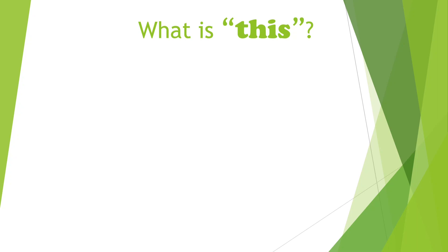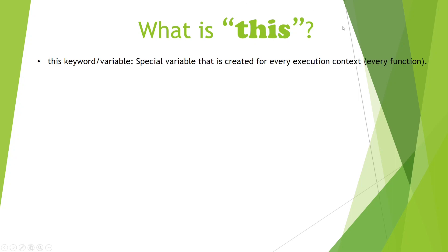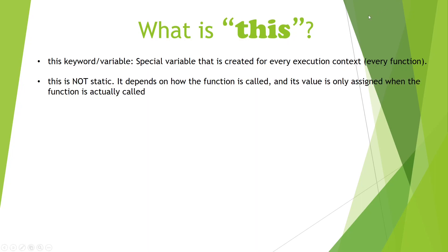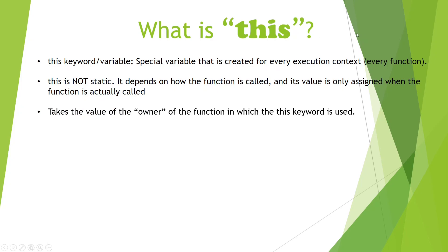So what is 'this'? This is a very special variable in JavaScript — you can also call it a keyword or a variable — but this variable is always created for every execution context. That means it's not static; it depends on how the function is called. By function I mean the function inside which we are using the 'this' keyword. The value of the 'this' keyword will be assigned based on the way we are calling it.